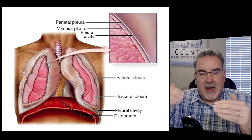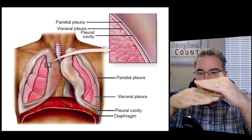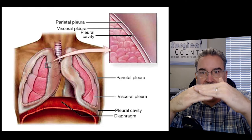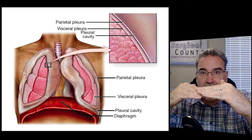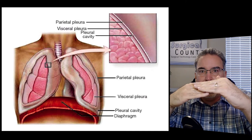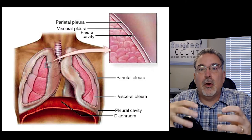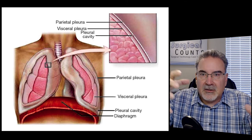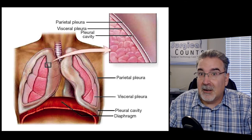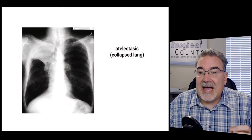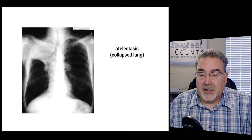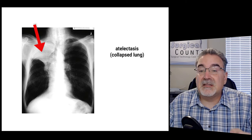Imagine what happens if a puncture through the chest wall gets air into the space between the two pleura — that space that's supposed to be a perfect vacuum holding the lung out against the chest wall. If air gets in there, the lung is going to collapse. That's a collapsed lung, which is very bad for the patient. The high-class term for a collapsed lung is atelectasis. In a chest x-ray, you can see the top of the right lung appears almost missing — that top lobe has collapsed.